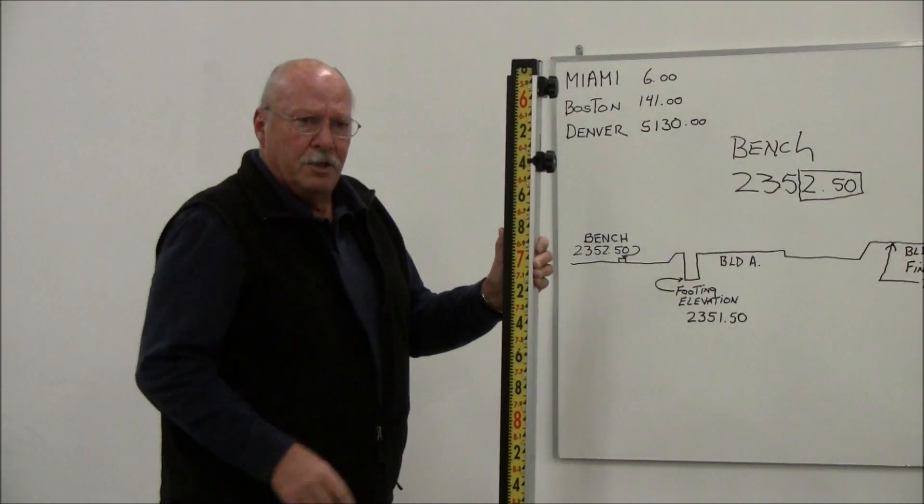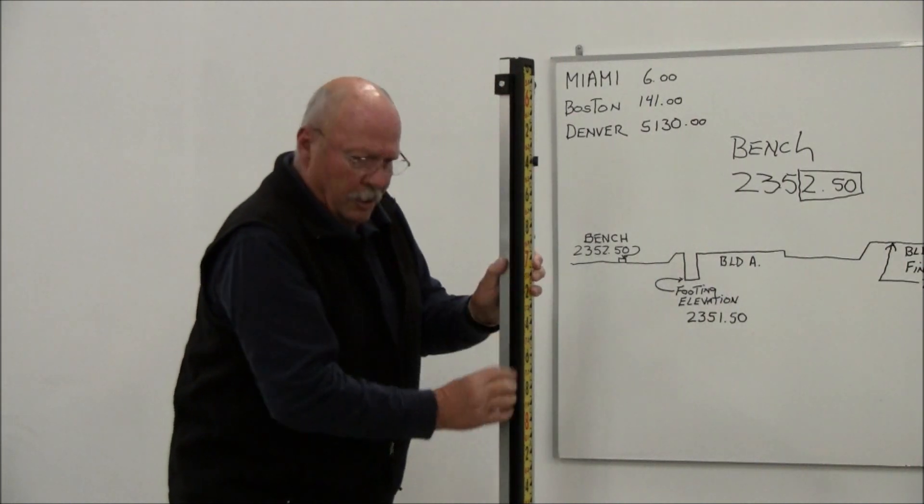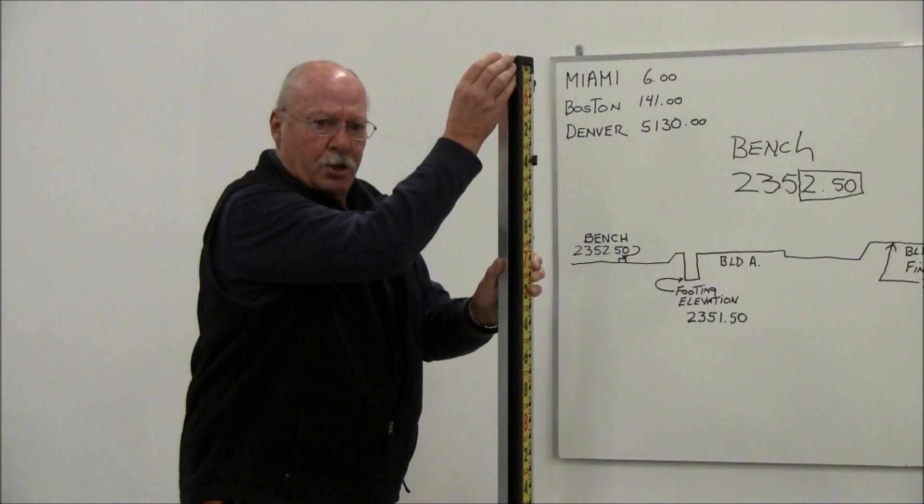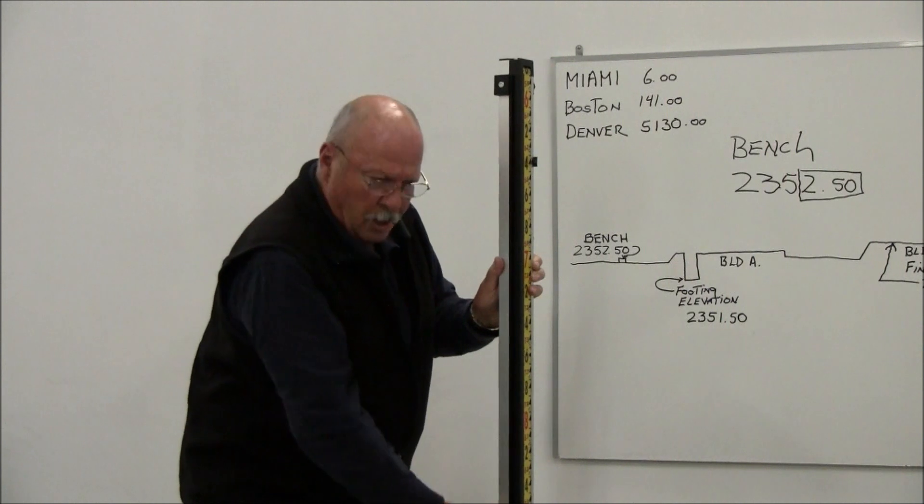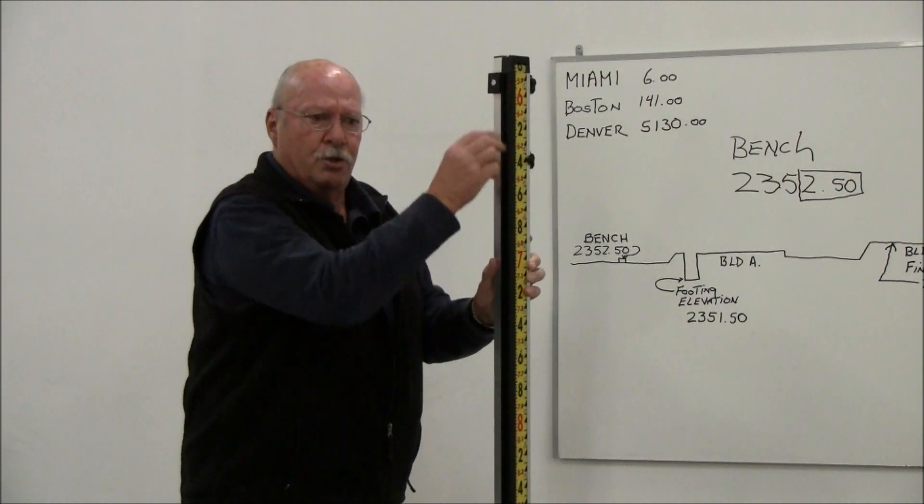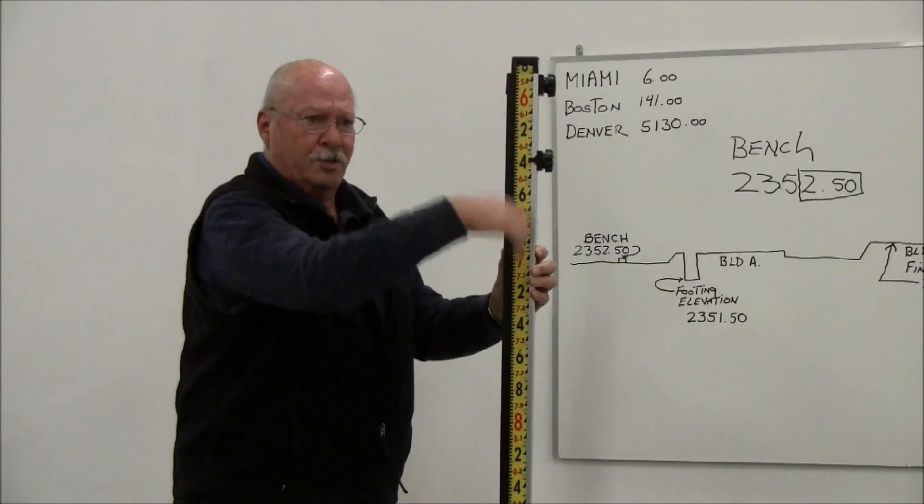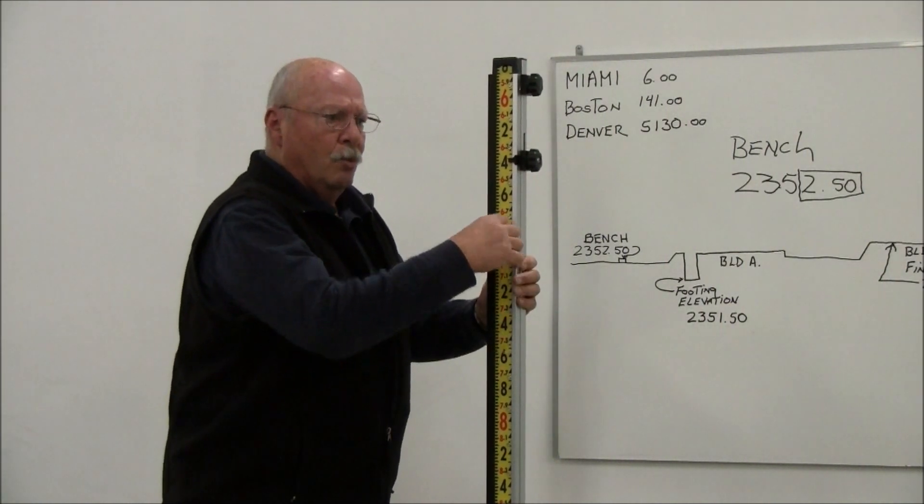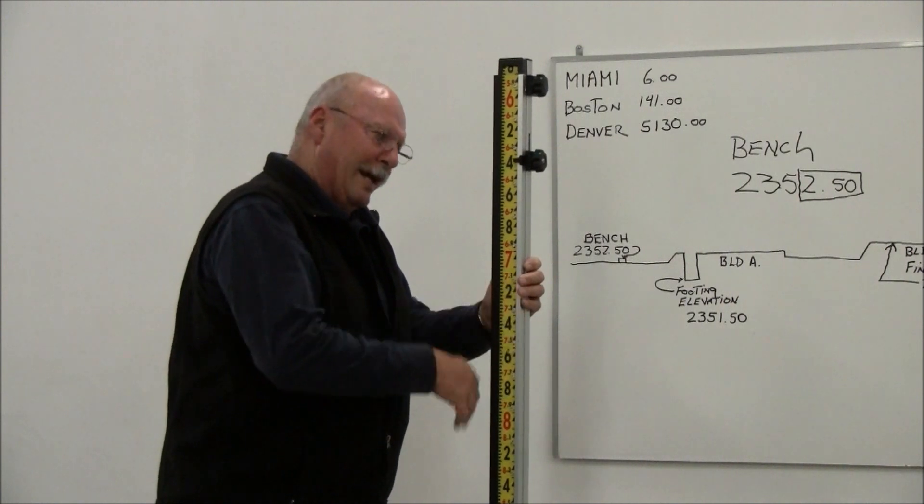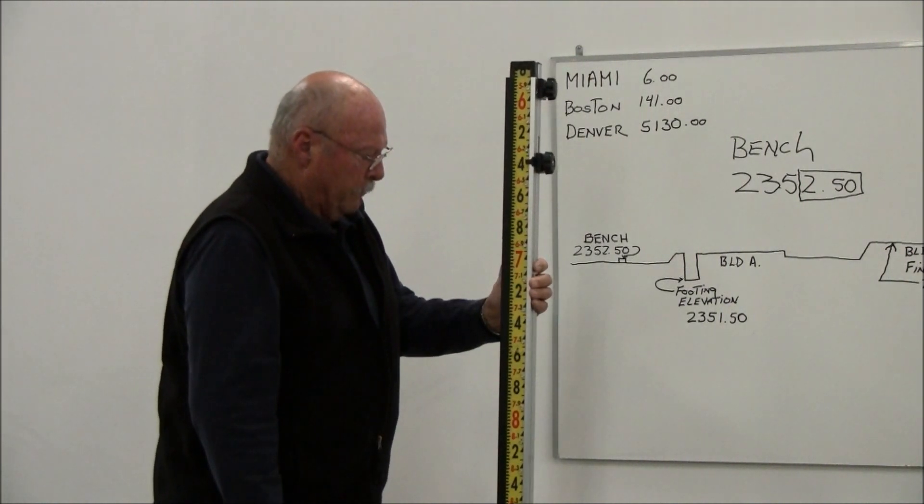The other thing about this grade rod is on the side of it—this particular rod is used with a laser—there is a rail on the side that allows you to set your detector in there and slide the detector the full 10-foot travel of the rod without having to continually loosen the clamp, tighten the clamp, run it up and down on the rod.